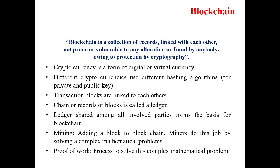Blockchain is a collection of records linked with each other, not prone or vulnerable to any alteration or fraud, owing to protection by cryptography. The best example of blockchain is cryptocurrency. One type of cryptocurrency is Bitcoin. People wrongly understand that blockchain is synonymous with Bitcoin — but Bitcoin was rather the success example of blockchain. Cryptocurrency is a form of digital or virtual currency. Different cryptocurrencies use different hashing algorithms for private and public keys. Transaction blocks are linked to each other, and a chain of records or blocks is called a ledger. A ledger shared among all involved parties forms the basis for blockchain.